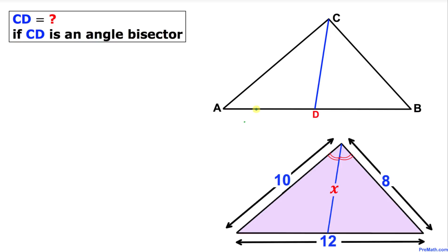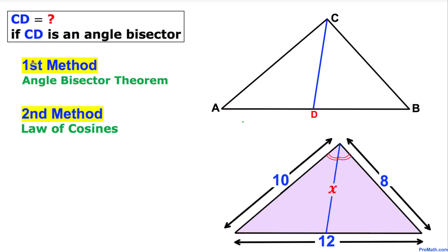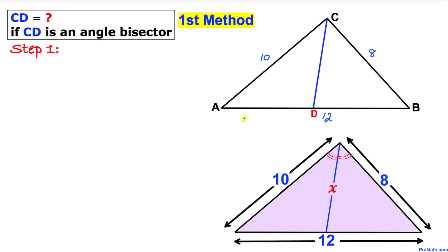Welcome to PreMath. In this video tutorial we have triangle ABC and line segment CD as an angle bisector, as you can see in this figure, and we are going to calculate the value of line segment CD. We are going to solve this problem by two different methods. The first method is the angle bisector theorem and the second method is the law of cosines. So let's go ahead and get started.